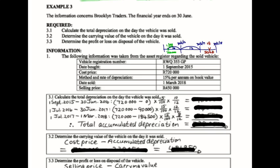Let's look at an example. The information concerns Brooklyn Traders; the financial year ends on the 30th of June. Required: calculate the total depreciation on the day the vehicle was sold; determine the carrying value; and determine profit or loss on sale of asset. The vehicle was bought on the 1st of September 2015 for a cost price of R720,000. It is depreciated at 15% per annum on the book value, and the date sold was the 1st of March 2018 for R450,000.